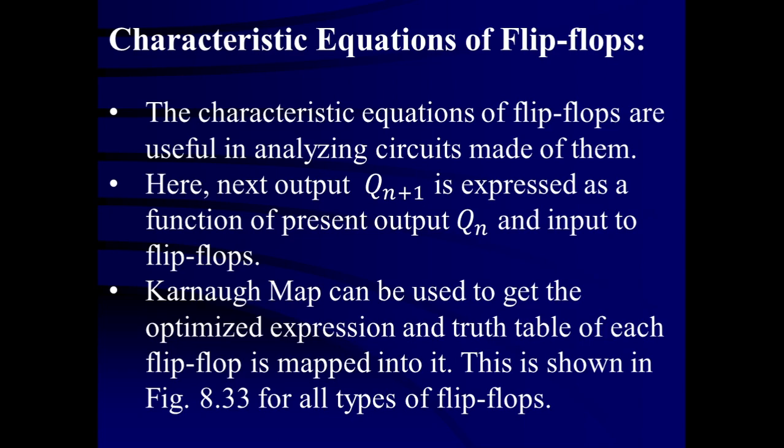For a three-variable Karnaugh map, there will be 2³ = 8 locations: M0, M1, M2, M3, M4, M5, M6, and M7 — for RS flip-flop as well as JK flip-flop. While M0, M1, M2, M3 will be there for D and T flip-flops.